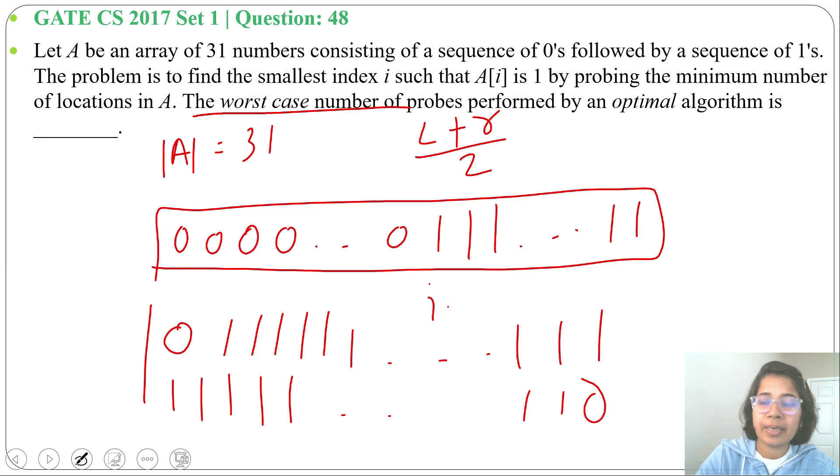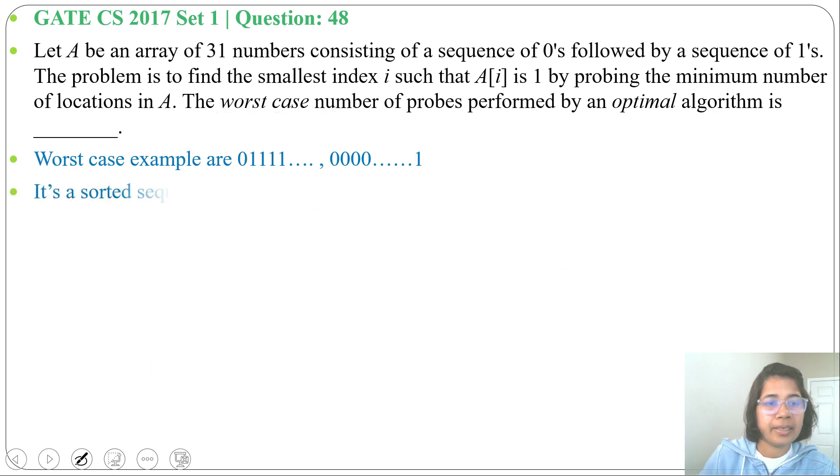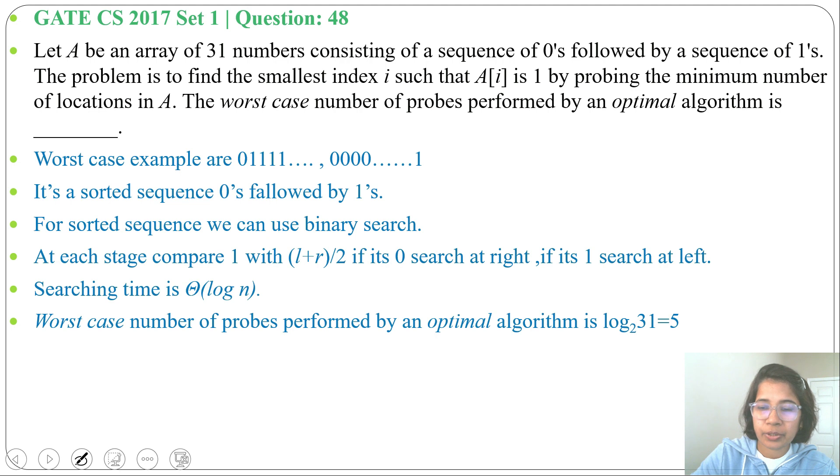In case of binary search, searching running time is theta of log n. Here also we will apply binary search. So running time will be theta of log n. And here n equals to 31, log 31 base 2 is 5.